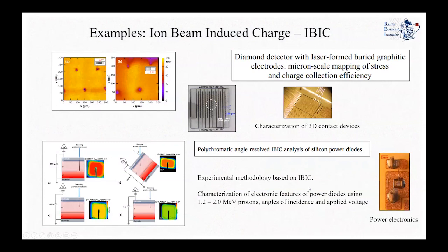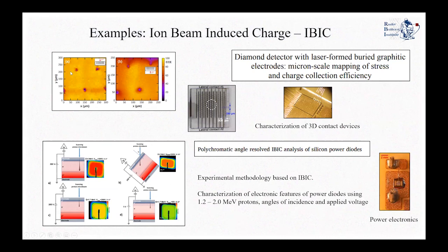Some examples recently done here in Roger Boscovich concern the characterization of 3D detectors — detectors designed with 3D contacts. With the IBIC technique, one can obtain very detailed information regarding the charge collection efficiency within the whole volume of the detector, between the strips, close to or further from the contacts. This allows one to take decisions regarding the design of the detector and monitor how efficiently it behaves within its whole volume.